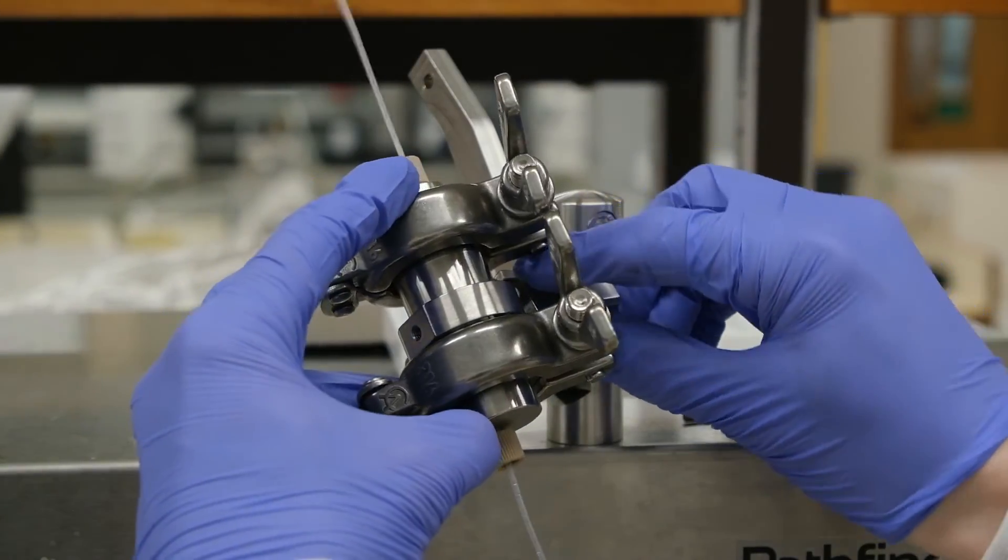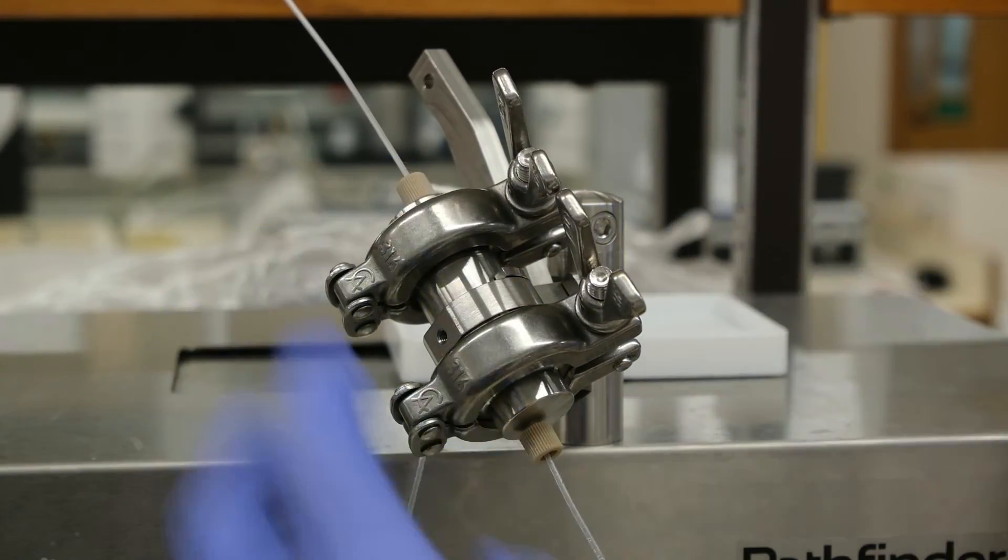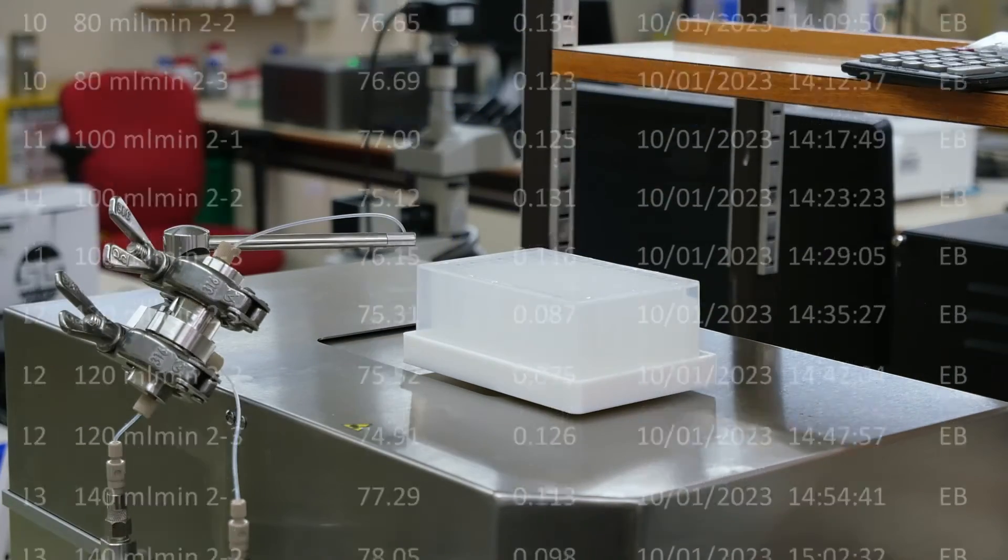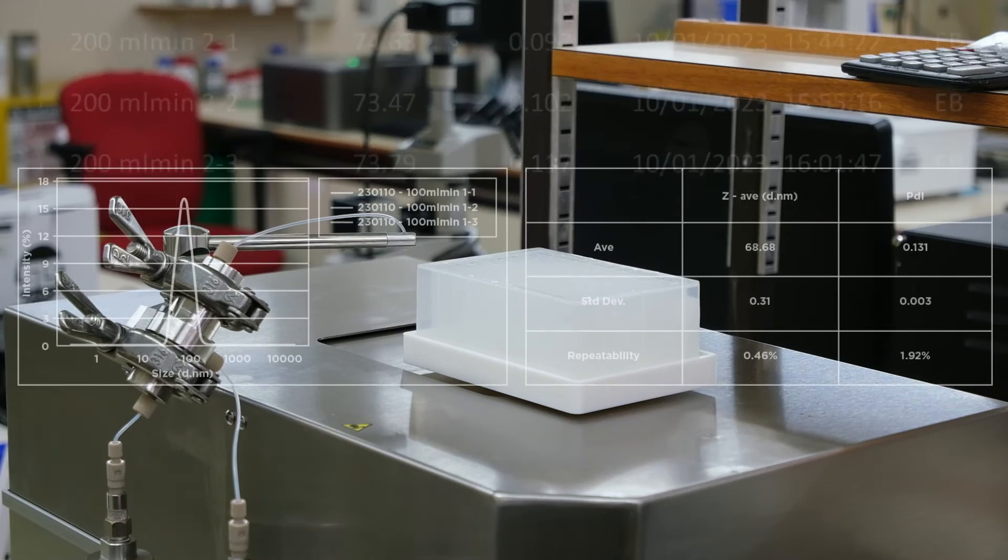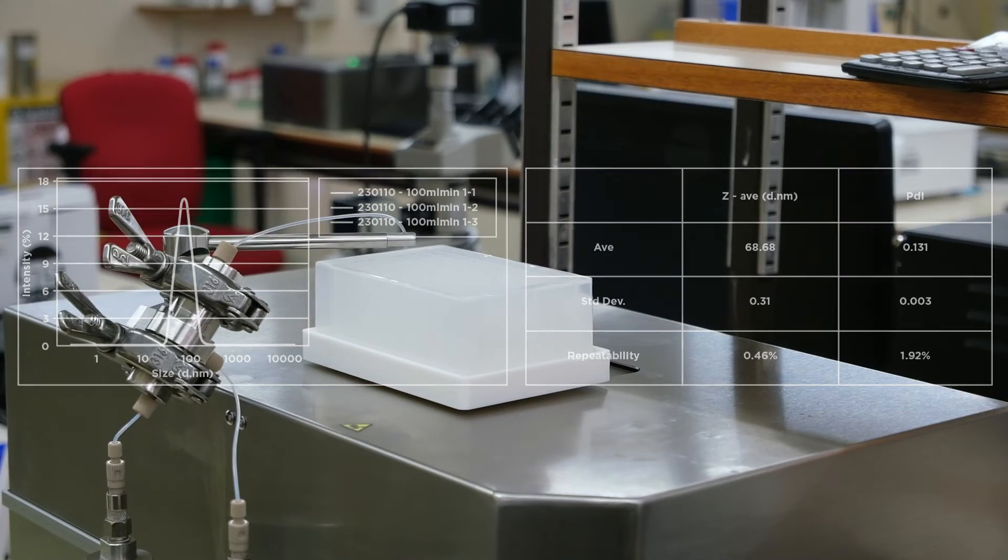The Pathfinder screens formulations into a programmable multi-well plate, producing aliquots as small as 200 microlitres. This can be increased to single samples of up to 250ml on the Pathfinder Pro 250 model.